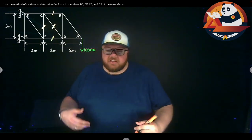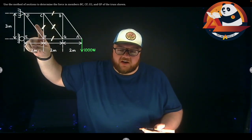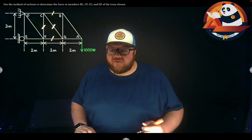So we know if we're tackling method of sections, we're going to slice through this eventually, cutting as many of our members as we can. That said, we have three equilibrium equations we can work with. I can't cut through more than three unknown members. So there's no way that I can get all four of these in one go at this point.